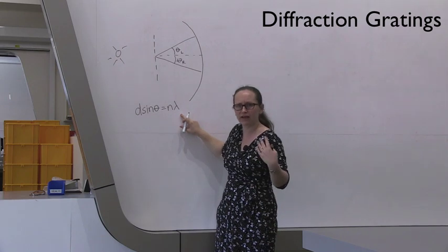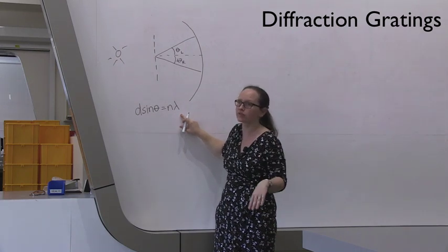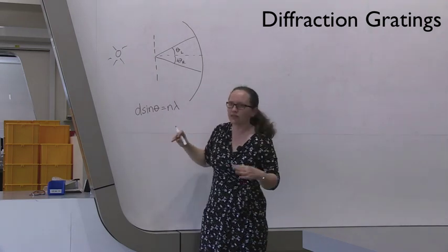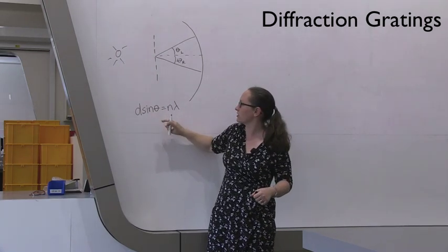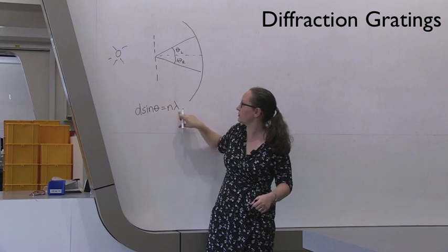So with the wavelengths for light, they're in the hundreds of nanometers. So in order to get d, you're going to need to measure theta, and you will know lambda.